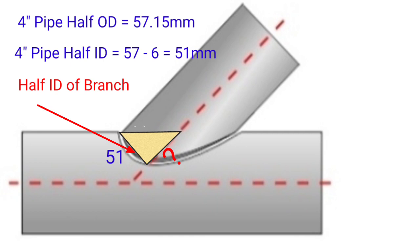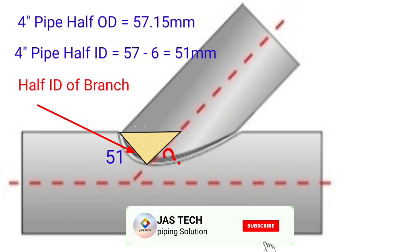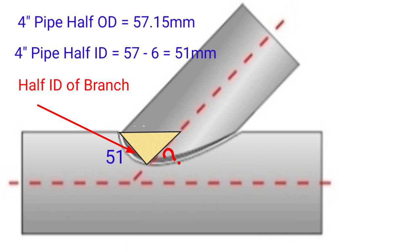Next, we want to find out branch or riser set value or run value. 4 inch pipe half OD equals 57.15mm. 4 inch pipe half ID equals 57 minus 6, equals 51mm.